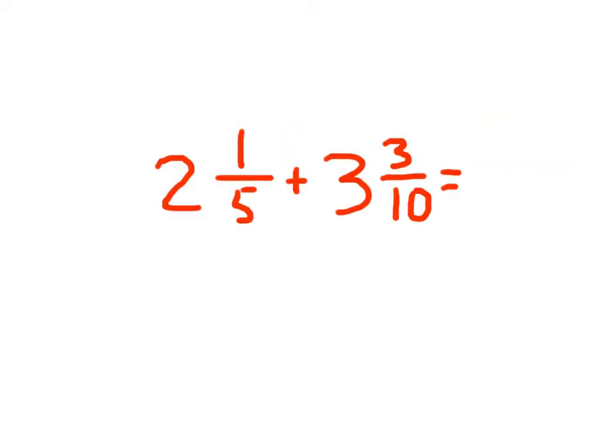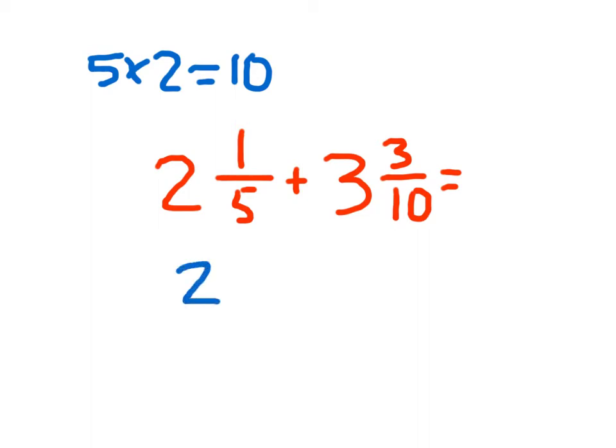Here I have two and one-fifth plus three and three-tenths. I still have two mixed numbers I'm adding, however the denominators are not the same, so this is adding with unlike denominators. I need to find a like denominator. Five times two equals ten, so we can convert two and one-fifth into tenths.